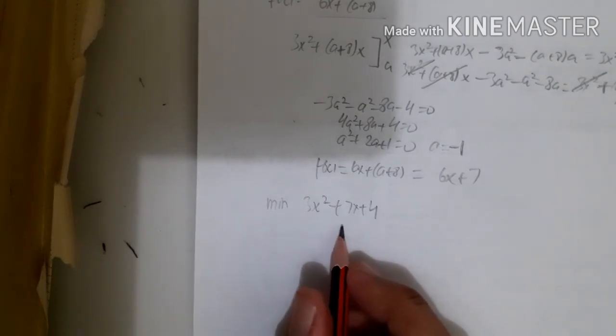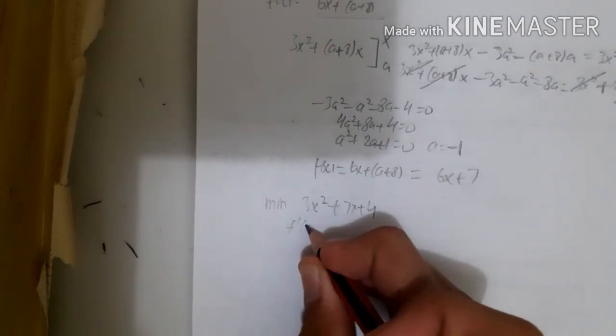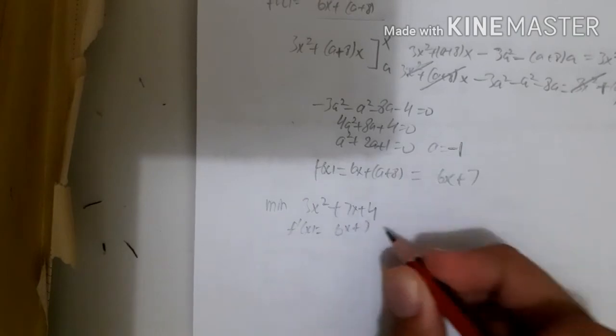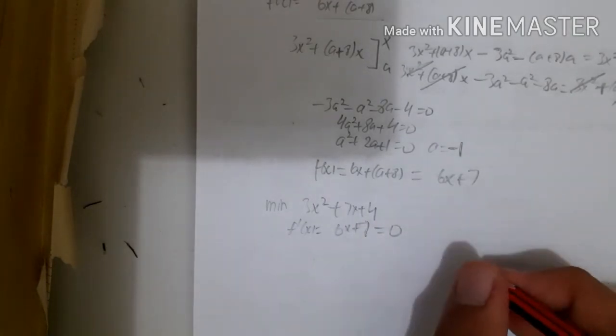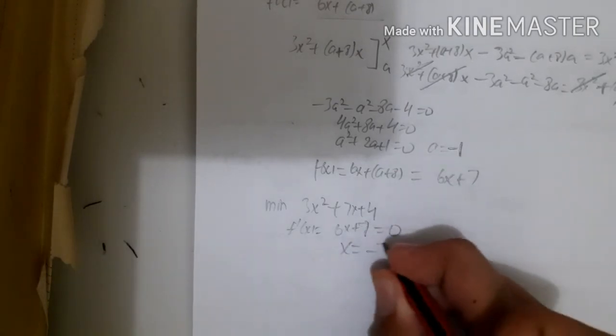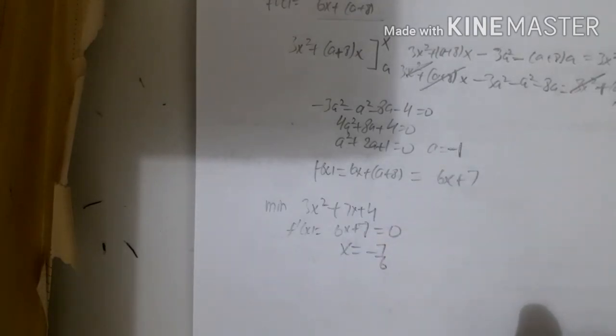To find the minimum, we take the first derivative: 6x + 7, and we make that equal to 0. Then we get x = -7/6.